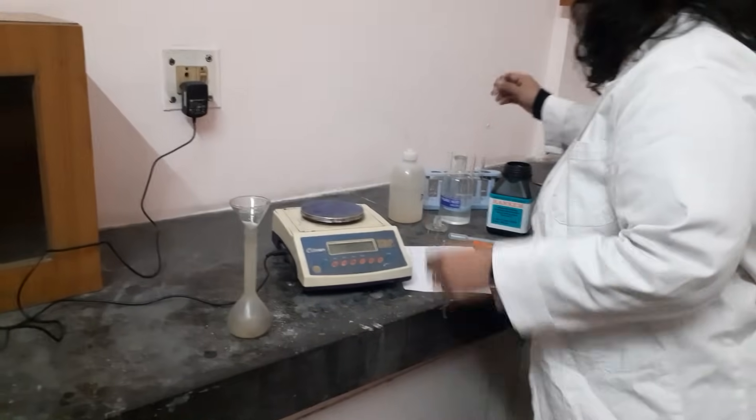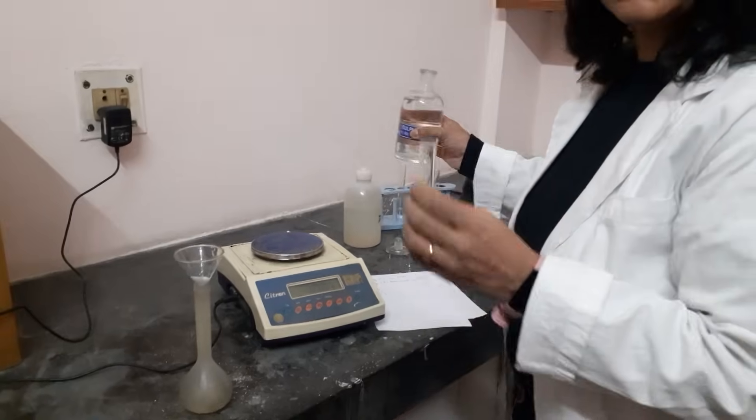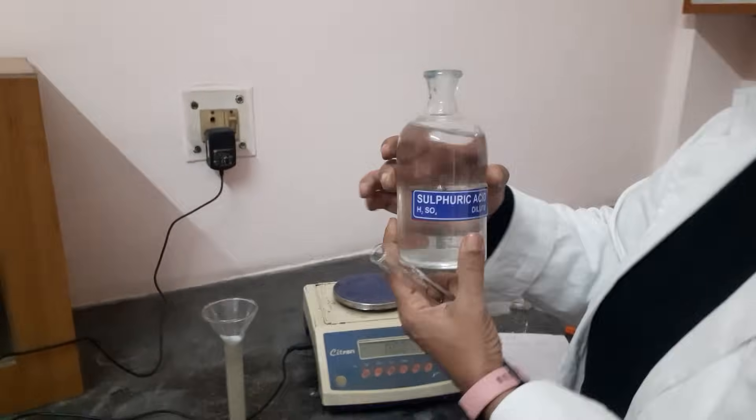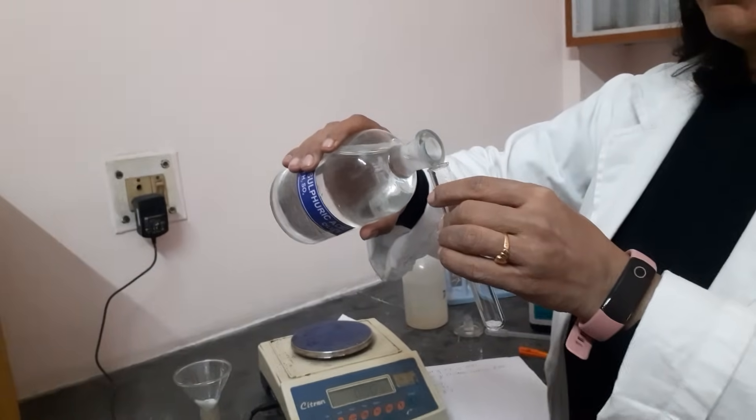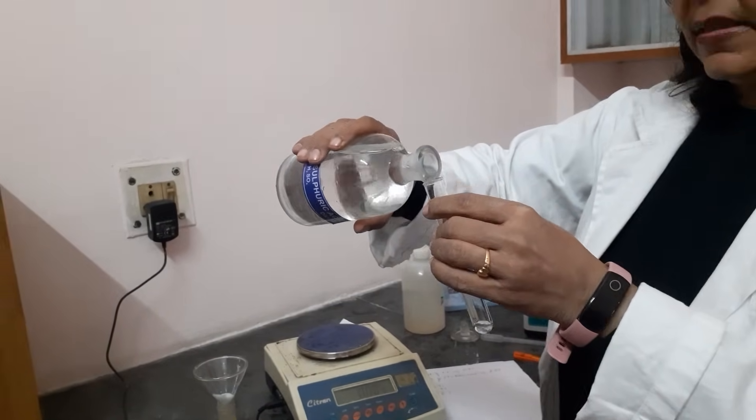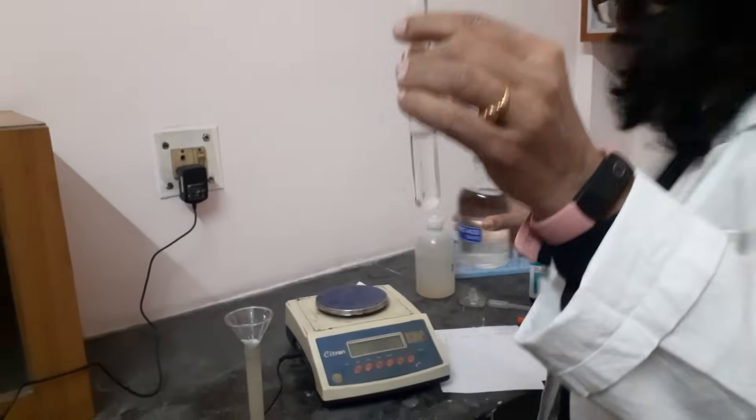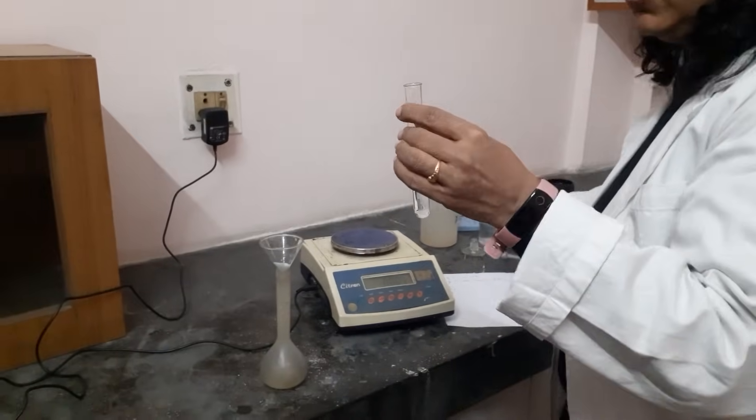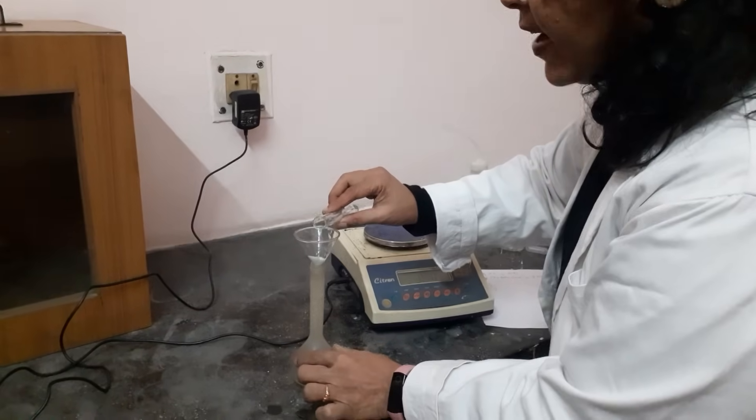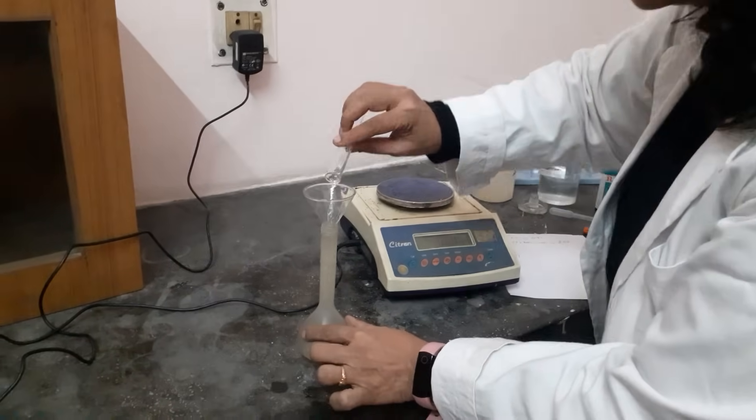But when we make Mohr salt solution, we have to add a little bit dilute sulfuric acid before adding water. Dilute sulfuric acid's purpose is to prevent hydrolysis. How much to add? 2 to 3 ml. So this is my 2 to 3 ml roughly. Add this so that it gets wet and prevents hydrolysis of the Mohr salt.